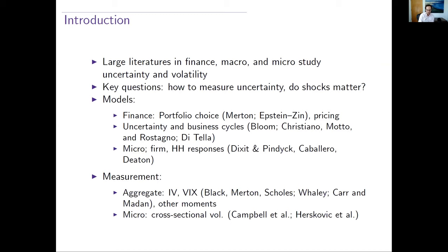We want to measure uncertainty, and in particular measure uncertainty in the cross section. Once we have that measure of cross-sectional uncertainty, we want to show that these things matter for the real economy. In finance, portfolio choice models require knowing not just volatility at the aggregate level, but also the variances and covariances of individual stocks. For derivatives pricing, any nonlinear function of the underlying depends on the variance of the underlying. We start with the simplest first step: what is the conditional variance in the cross section?